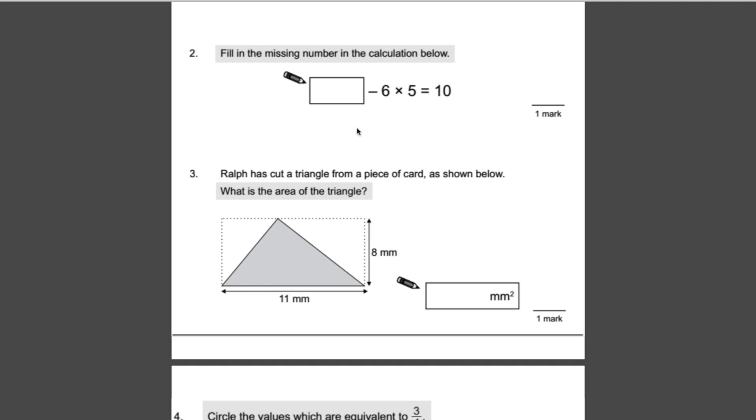Number 2 is a BODMAS question. In a normal equation with multiplication and subtraction, we need to do the multiplication first because the M comes before the S. So in this case we'll do 6 times 5 first, which is 30. Something minus 30 equals 10. We can do the inverse: 10 plus 30 is 40. Run that back to make sure it makes sense: 40 minus 30 equals 10. That must be the right answer.